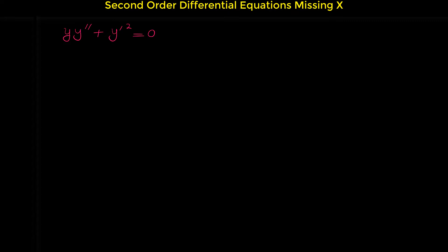For solving these types of differential equations in general, we use a substitution: we suppose z to be y prime. This substitution is similar to the one we used when we had differential equations without y, but the next step is a bit different from that case.